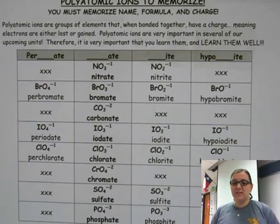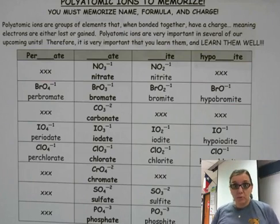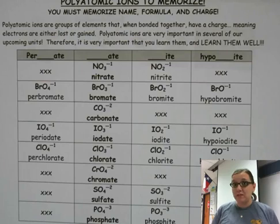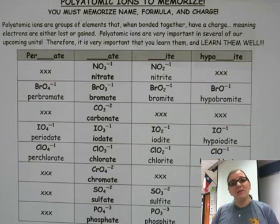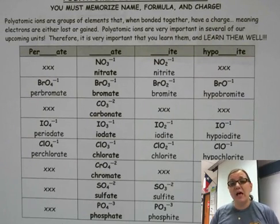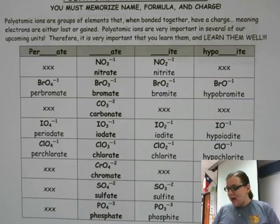These are one of those things that are really tricky for students to memorize just because they seem totally random. They won't be random eventually, especially when we learn to name and write formulas of compounds, but for now it just seems like we're having you memorize random stuff. So I want to give you some tips and tricks that you can use to help yourself try and get used to memorizing these.